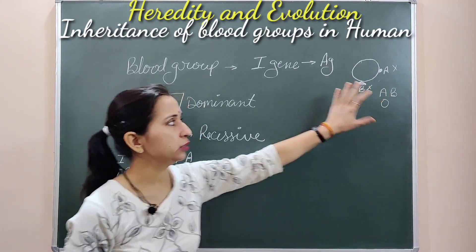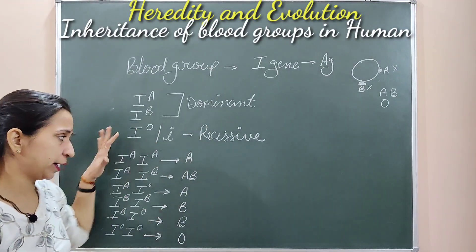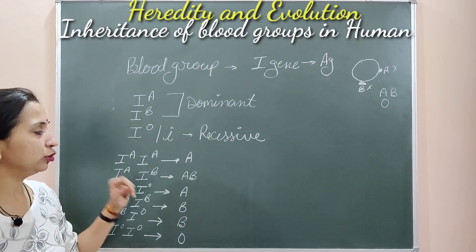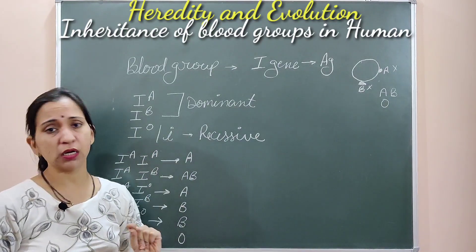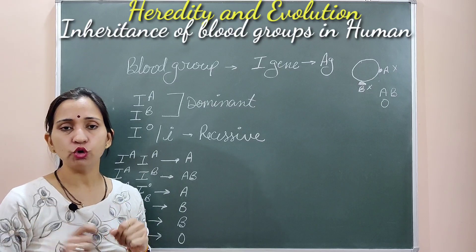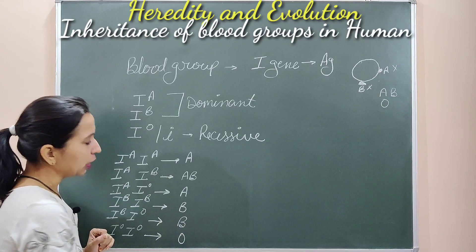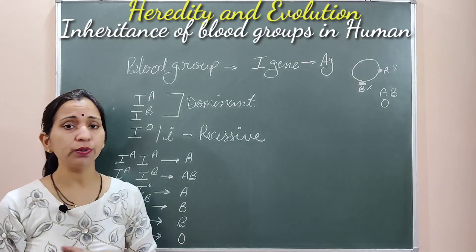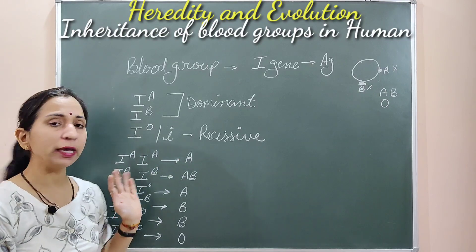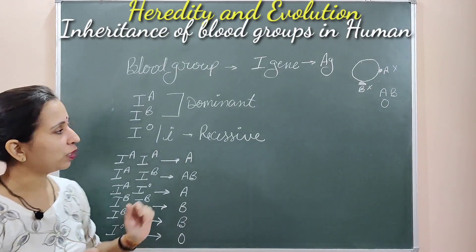So we have discussed the different alleles and how these alleles are responsible for determining the blood group. Now we will try to understand these things with the help of an example.